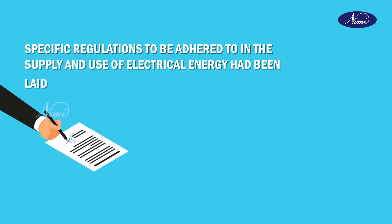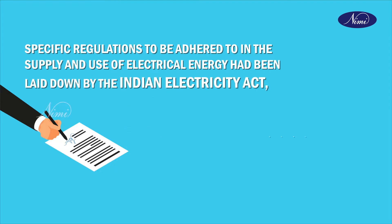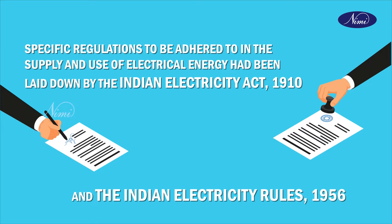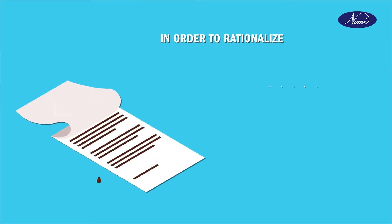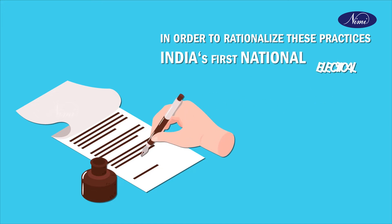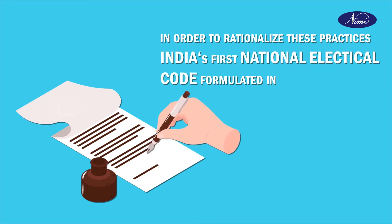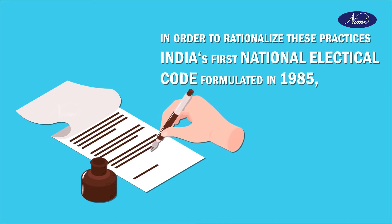Specific regulations to be adhered to in the supply and use of electrical energy are laid down in the Indian Electricity Act 1910 and the Indian Electricity Rules 1956. In order to rationalize these practices, India's first National Electrical Code was formulated in 1985.